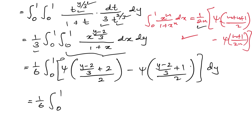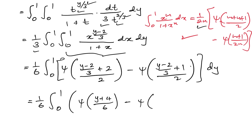Simplifying the arguments: 3 times 2 gives 6, so we have (1/6) times the integral from 0 to 1 of [digamma of (y plus 4)/6 minus digamma of (y plus 1)/6] dy.